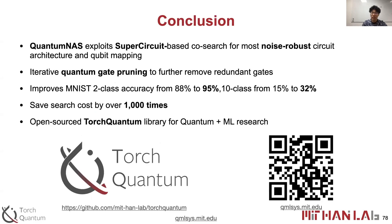Finally, as a conclusion: QuantumNAS exploits super-circuit-based co-search for the most noise-robust circuit architecture and qubit mapping. It proposes iterative quantum gate pruning to further remove redundant gates. It improves MNIST 2-class classification accuracy from 88% to 95% and 10-class accuracy from 15% to 32%, and saves search costs by over 1,000 times over the naive baseline. We also open-sourced the TorchQuantum library for research in quantum computing and machine learning. Thank you for watching, and for more details, welcome to visit our website at qmfsys.mit.edu.